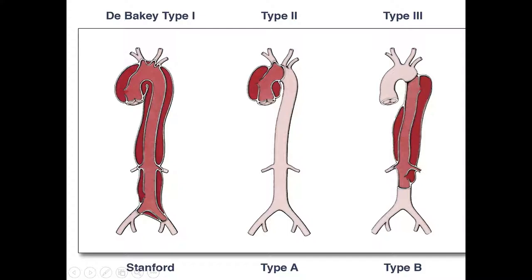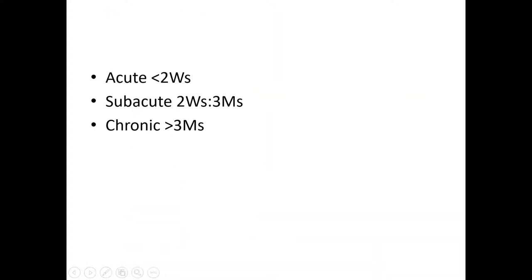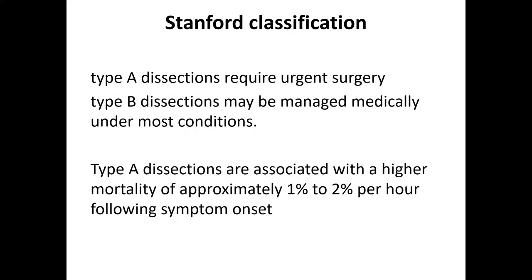We also have a temporal classification: acute if below two weeks, chronic if above three months, and subacute if in between. Stanford Type A requires urgent surgery and Type B can be managed medically. In Type A, mortality is associated at one to two percent per hour, so we need to urgently refer the patient to the operating room.